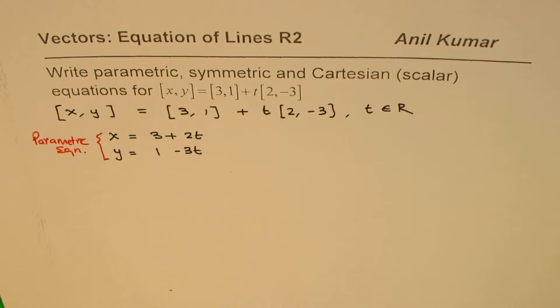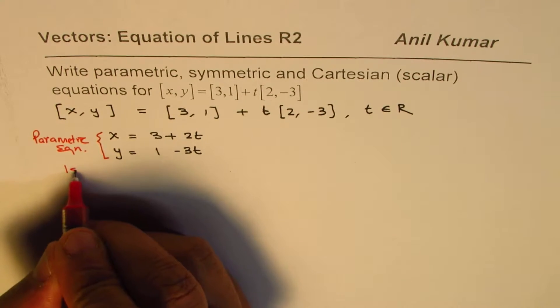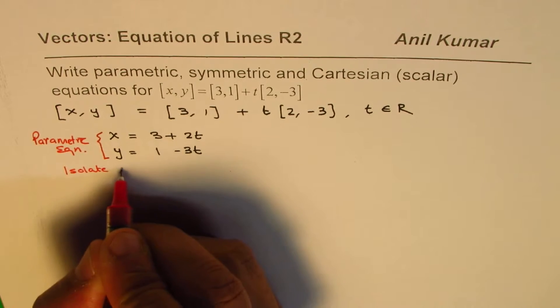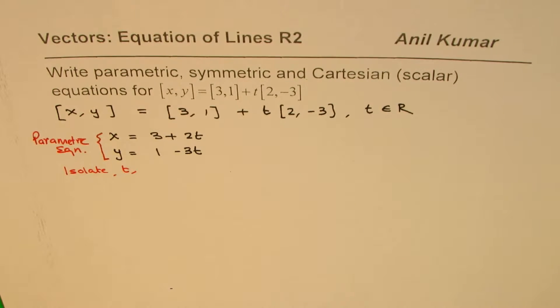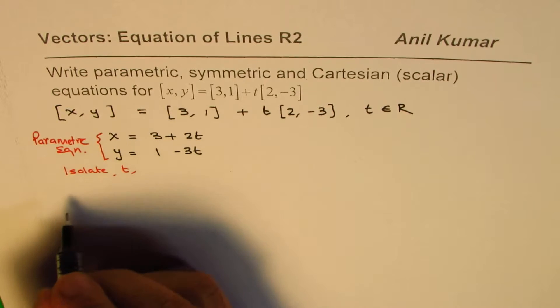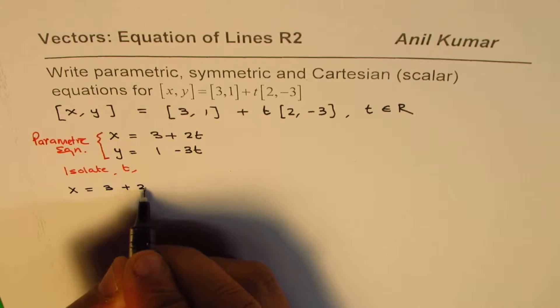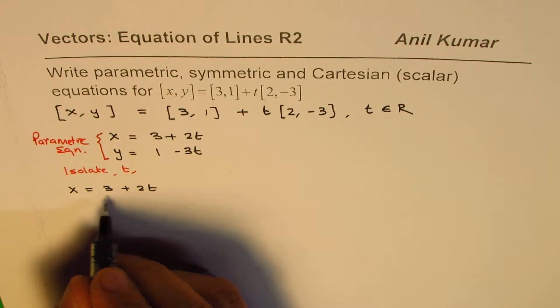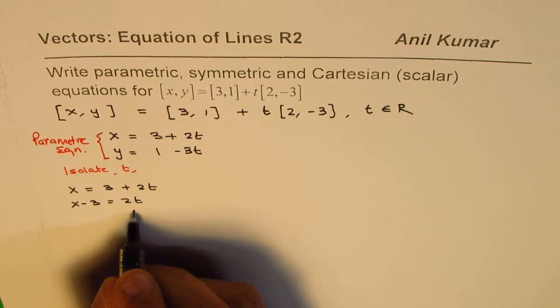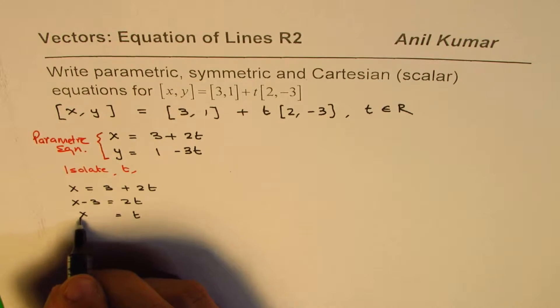Now to get the symmetric equation, what we need to do is isolate t. So we have the equation x equals to 3 plus 2t. We can write this as x minus 3 equals to 2t, and then from here, t equals to (x - 3) divided by 2.